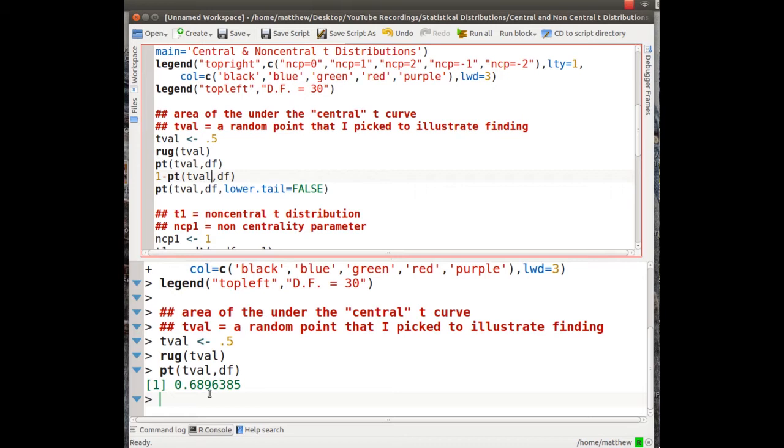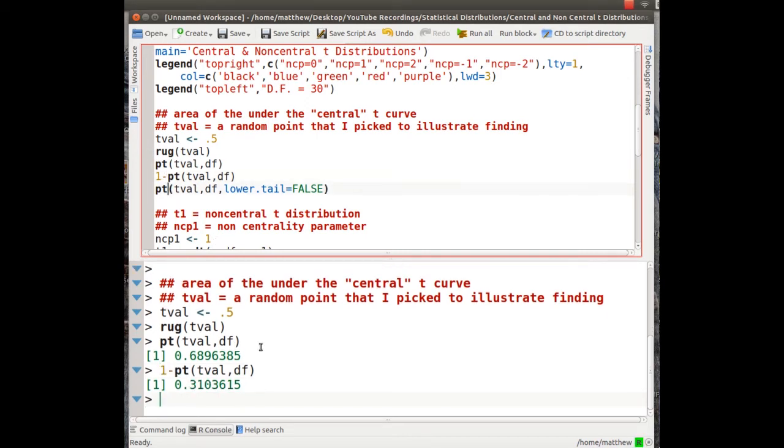Now to calculate the area to the right, because the total is 1, we could just subtract that from 1, and we get 0.31. So this is the area to the right of 0.5, and we add those together, we get 1. There's also another way to calculate it using the pt function. We just say lower.tail equal false.